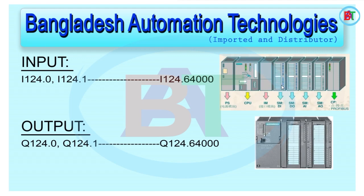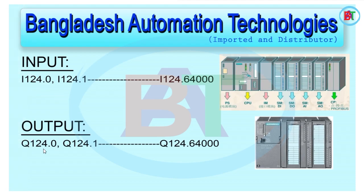We will now select Digital Input. Looking at the configuration and connection, the first part is Digital Input, then part to part. The third part is Digital Input. The output address is I 124.0 and the corresponding output is Q 124.0.